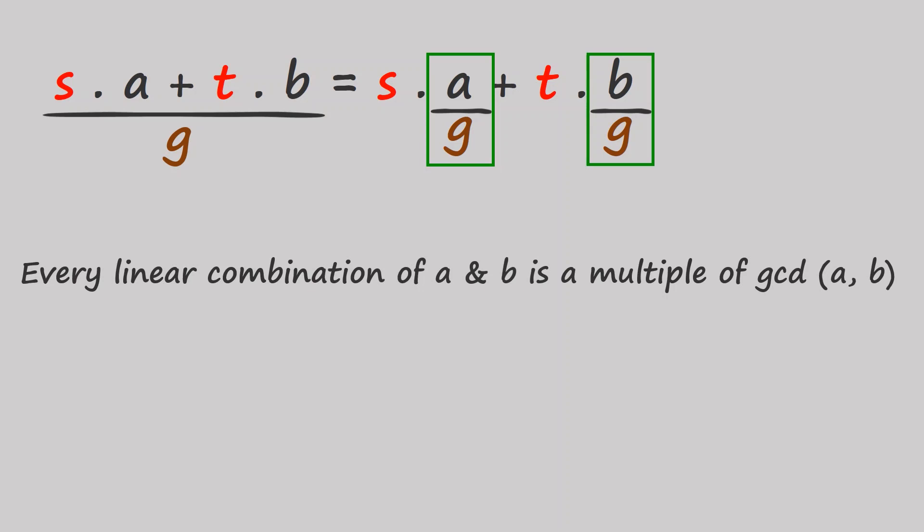And that's precisely why it's impossible to get 4 liters of water using 3 and 6 liter flasks. Because the greatest common divisor of 3 and 6 is 3, and 4 is not a multiple of 3. But you might ask yourself, is the opposite of this statement true? Is every multiple of G a linear combination of a and b? Or for that matter, is G itself a linear combination of a and b?